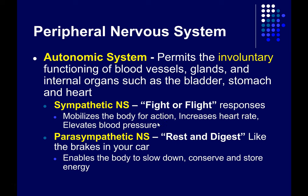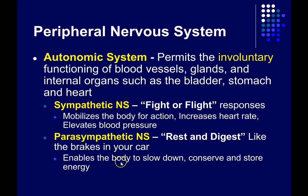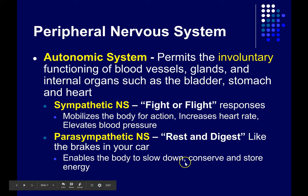Once you've made it back to camp, the parasympathetic nervous system would become relatively more active and would turn on your digestion again. You can think of the parasympathetic nervous system as the rest and digest system. It's like the brakes on your car — slowing things down, allowing the body to take care of basic vegetative functions, conserving and storing energy, and maintaining basic metabolic functions.